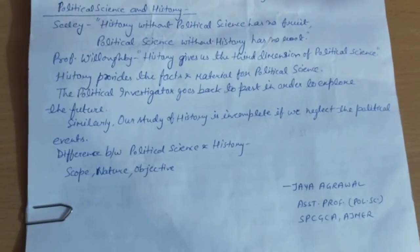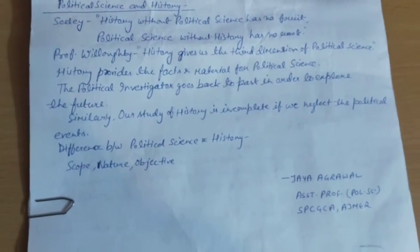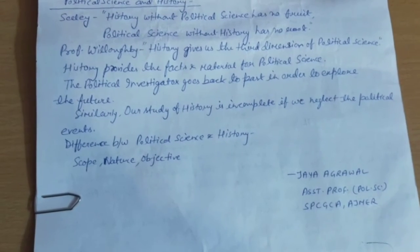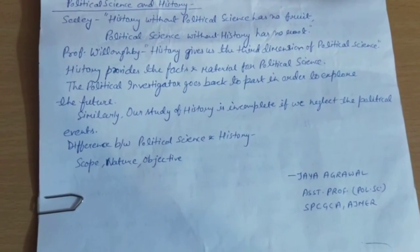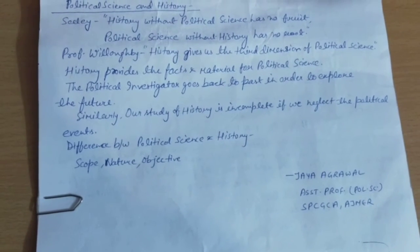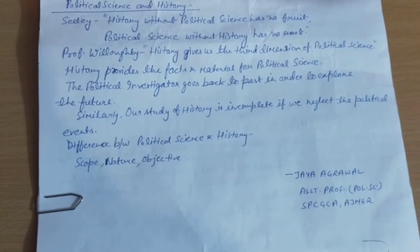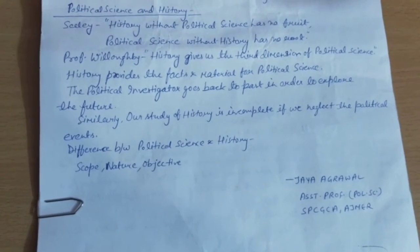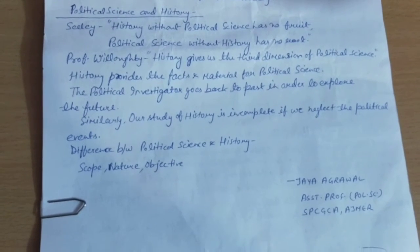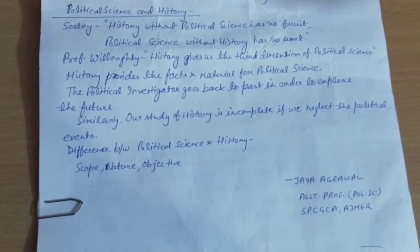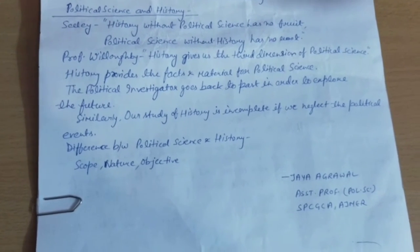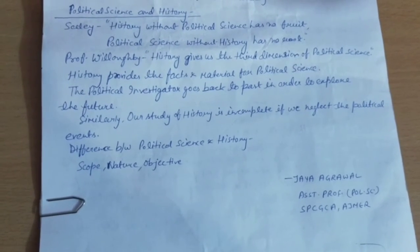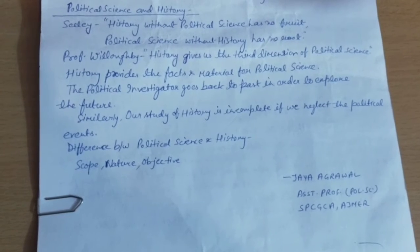Now here comes the difference between political science and history. The first difference is related to scope. History is considered as having a wider scope than political science, and history includes all the aspects of life — whether political, social, economic, or cultural. But in political science, we include only the political aspects of our life.